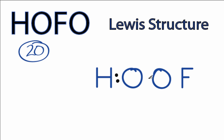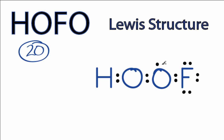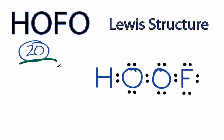We'll put two valence electrons between atoms to form chemical bonds. We've used six, and then we'll go around the fluorine — eight, ten, twelve — back to the middle to fill the octets for oxygen — fourteen, sixteen, eighteen, and twenty. At this point, we've used all 20 valence electrons for the HOFO Lewis structure.